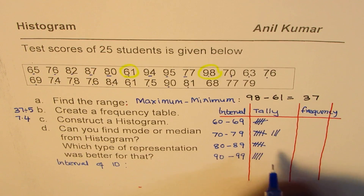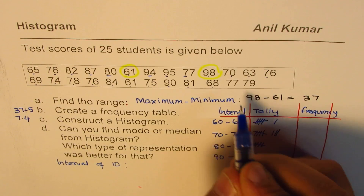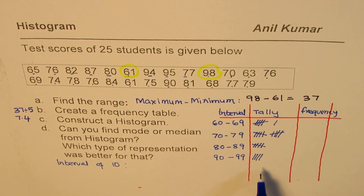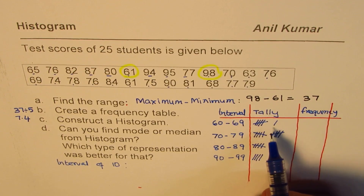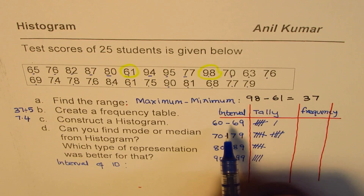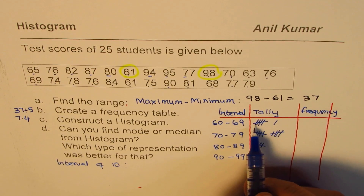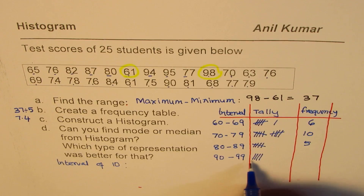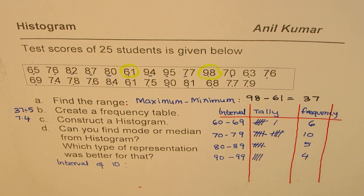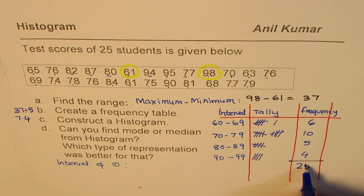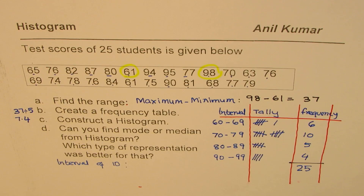Continuing the tally: 78, 76, 84, 61 and more values are recorded. Completing the tally gives us: 60 to 69 has 6 students, 70 to 79 has 10, 80 to 89 has 5, and 90 to 99 has 4. Adding them up: 6 + 10 + 5 + 4 = 25, which confirms we have included all students and missed none.